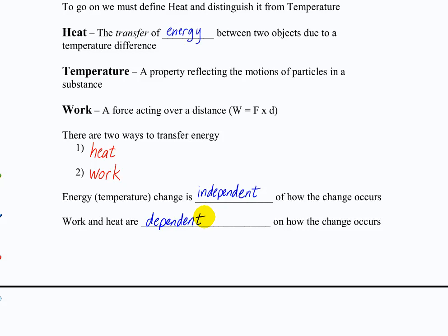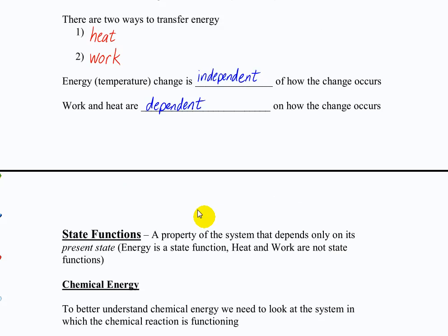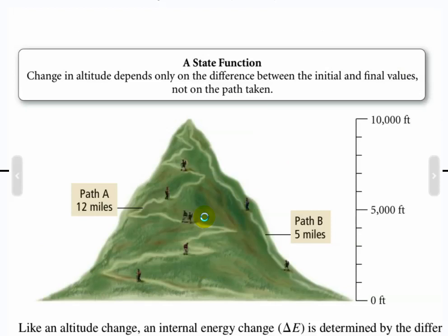And to contrast that, work and heat are dependent on that change. So you can think of various ways to transfer energy. Maybe you put some heat in, take some heat out, do some work, put more heat. Depending on how you do that, you can use more or less work or heat. But the energy change is the same. There's a nice picture in the book here. A state function depends only on its present state.